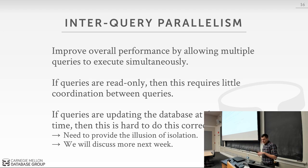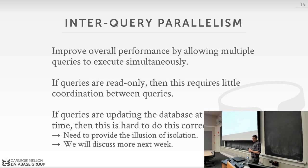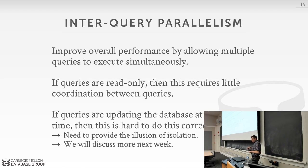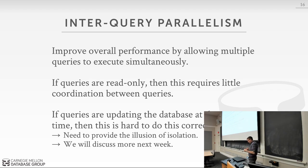Interquery parallelism means multiple queries run at the same time in our system. If everything is read-only, this is super easy because threads don't need to coordinate. The trouble starts when queries are updating the database simultaneously — that's when you need a concurrency control protocol, which we'll discuss next week, to ensure each worker only reads the data it's supposed to. The concurrent control protocol gives the illusion that each worker is running alone in the database even though they're not — this is really hard and one of the most exciting parts of databases.